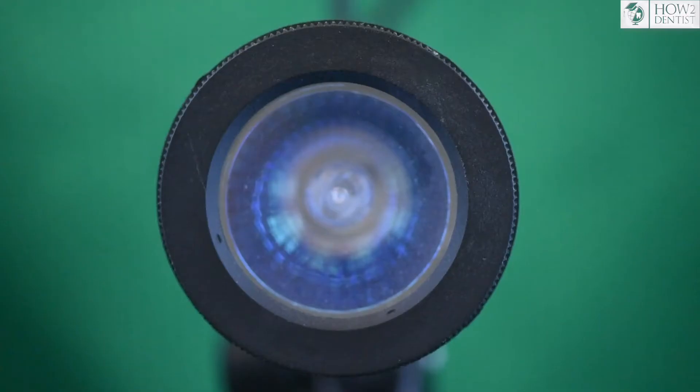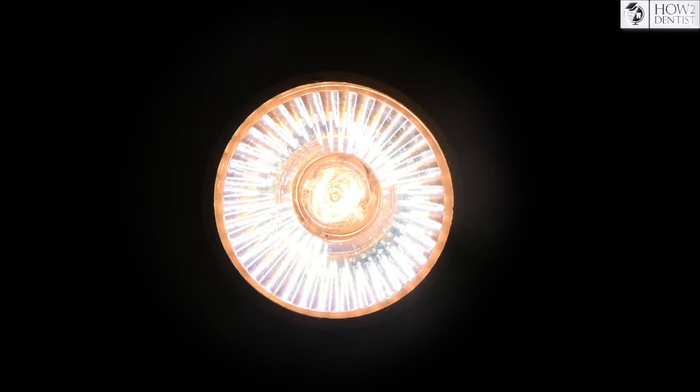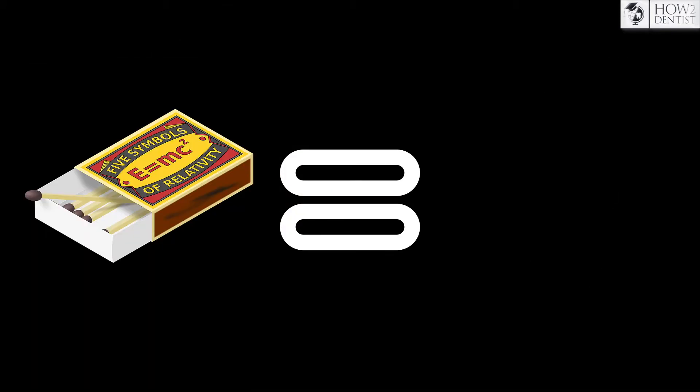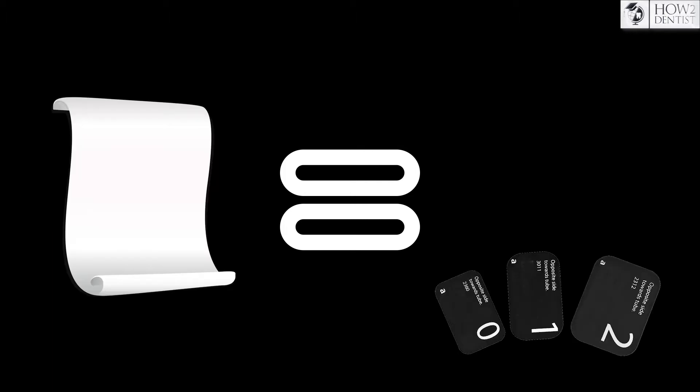As we've said, x-rays are actually light. For better understanding of x-ray geometry, we'll use a flashlight to imitate an x-ray tube, a regular matchbox to imitate a tooth, and a sheet of paper to serve as a film or visiograph sensor.